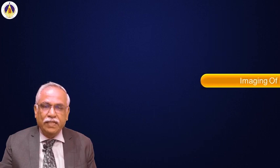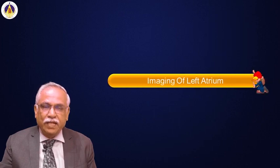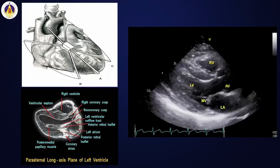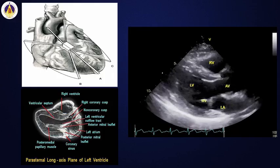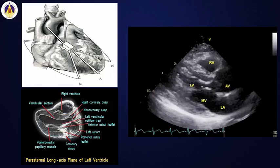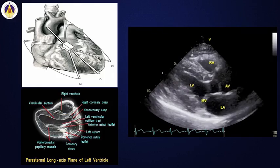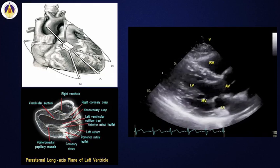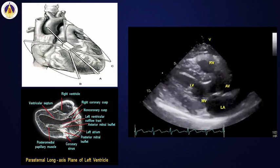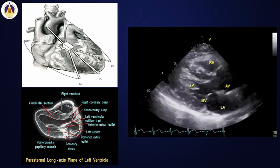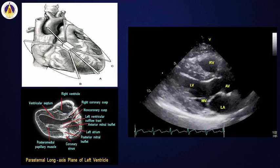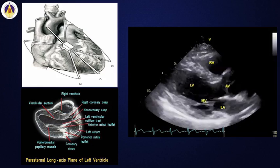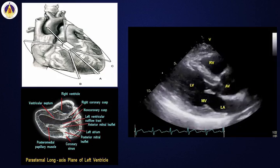The imaging of the left atrium can be done by the transthoracic approach or by the transesophageal approach. From the transthoracic approach, from the parasternal long axis view, we can study the left atrium and the left ventricle along with the mitral valve and aortic valve.